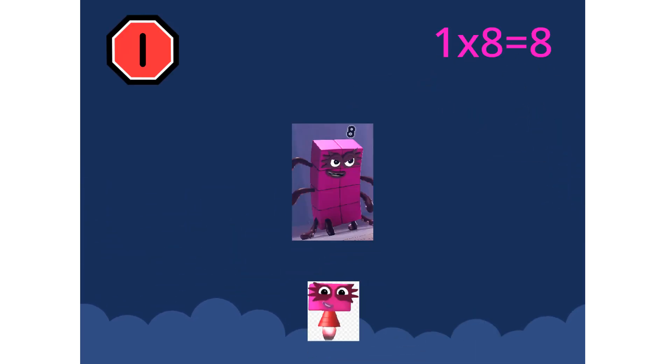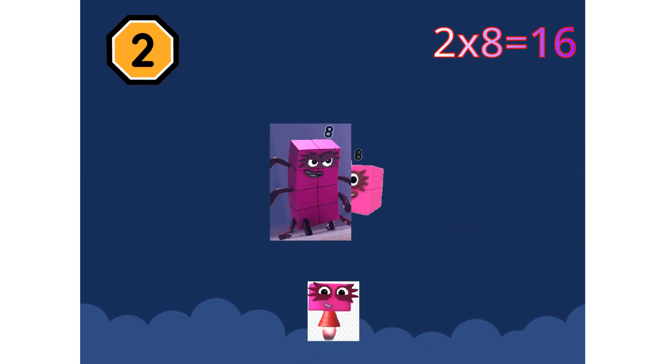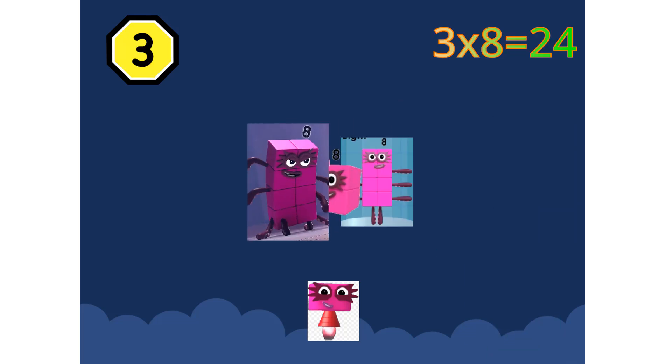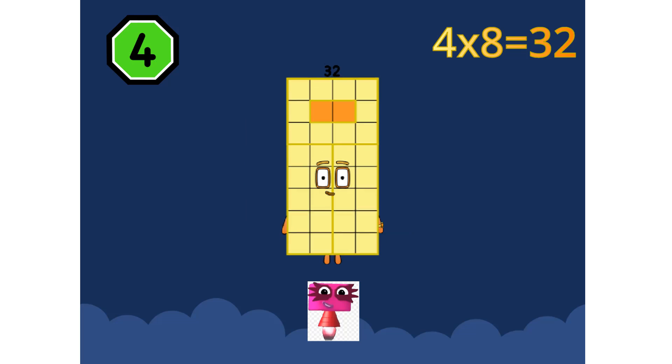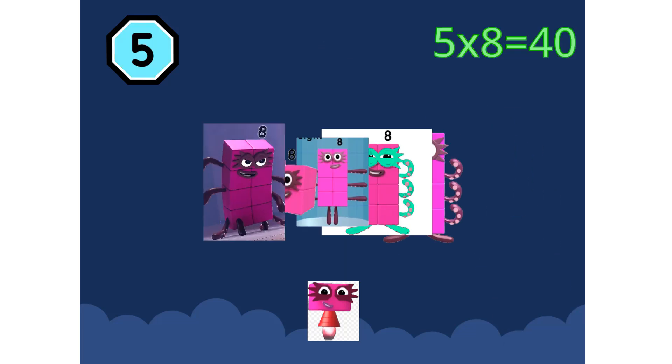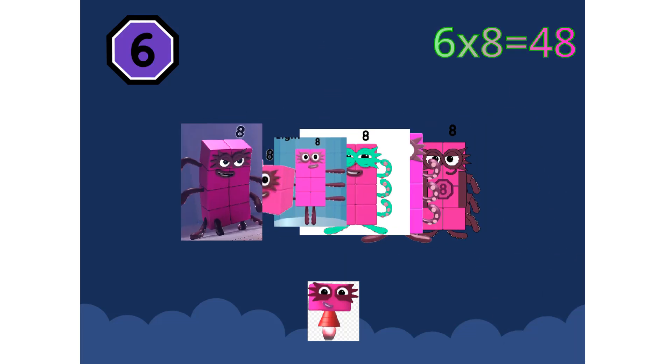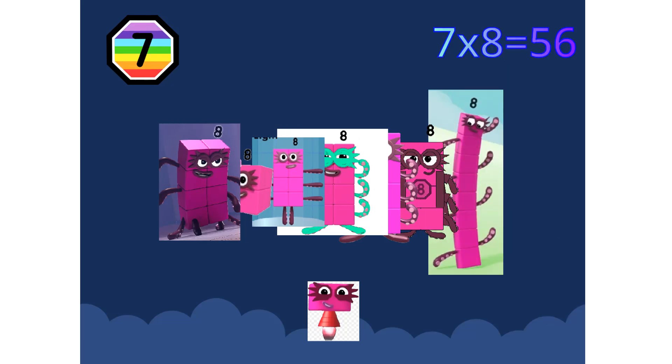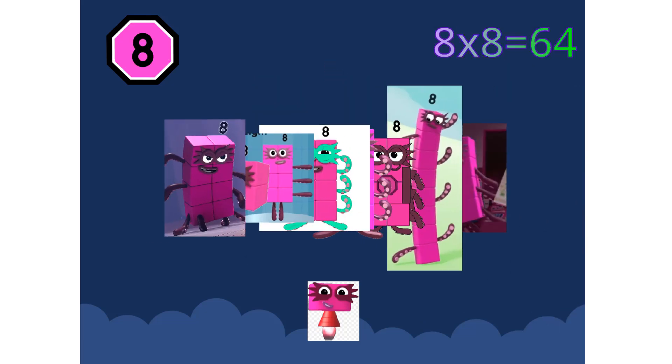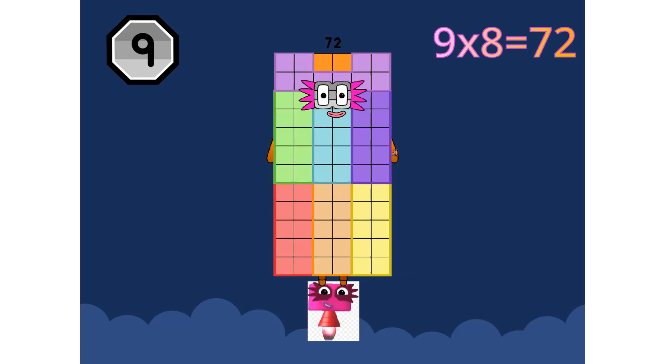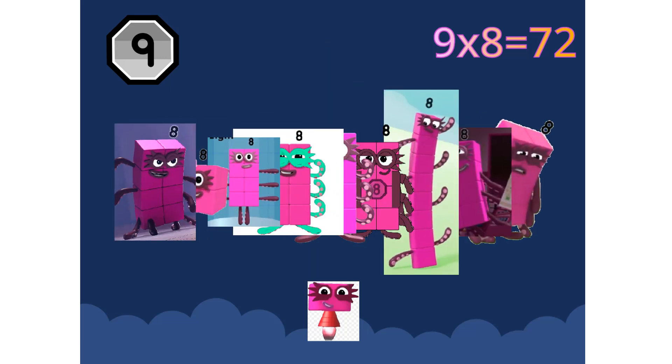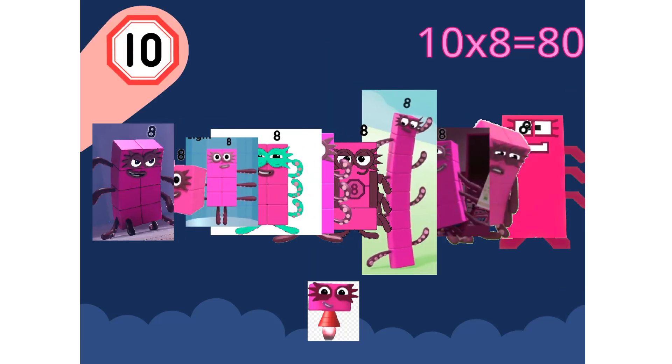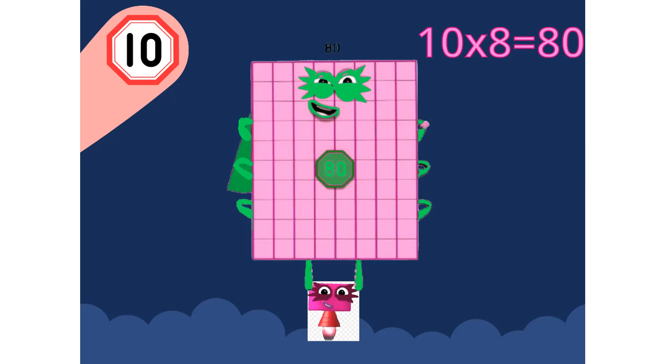Super 8s, assemble! 1 8 is 8, 2 8s are 16, 3 8s are 24, we will heed the call 4 8s are 32, 5 8s are 40, 6 8s are 48, we'll catch you when you fall 7 8s are 56, 8 8s are 64, 9 8s are 72. Here's the biggest of them all, the Super 8 who has it all, 10 8s are 80.